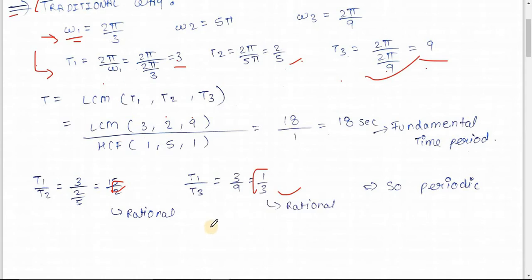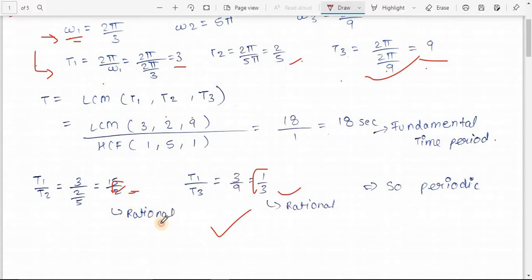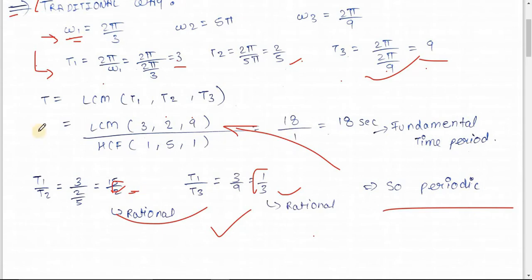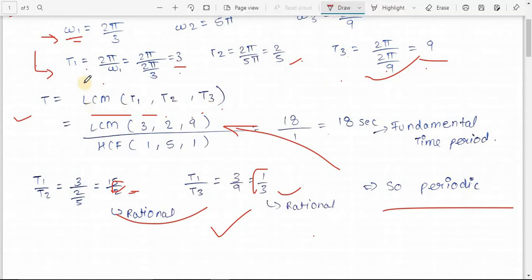T₁/T₃ = 3/9 = 1/3. If these ratios are rational, then the signal is periodic. If irrational (containing π or never-ending terms), the signal is aperiodic. Since both ratios are rational, this signal is periodic. Now we find the fundamental time period, which is the LCM of T₁, T₂, and T₃.